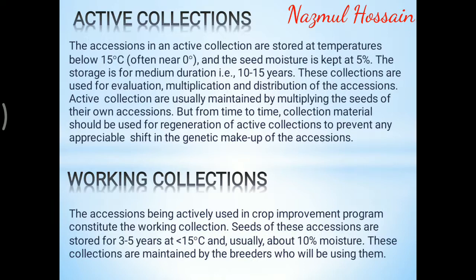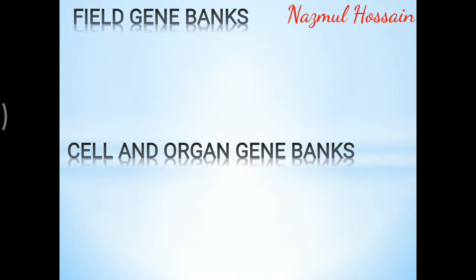Working collections: the accessions being actively used in a crop improvement program constitute the working collection. Seeds of these accessions are stored for 3 to 5 years at below 16 degrees Celsius and usually about 10% moisture. These collections are maintained by the breeders who will be using them.